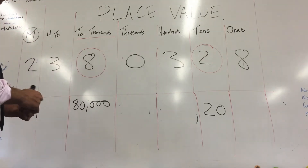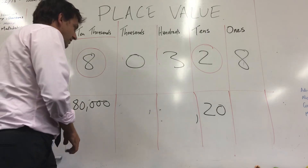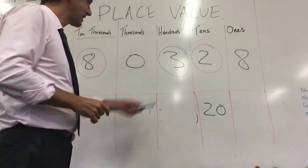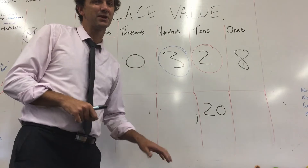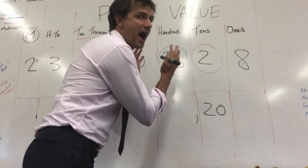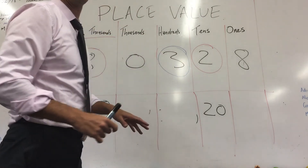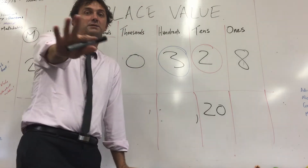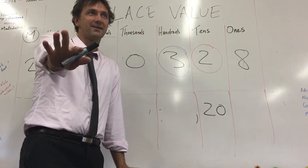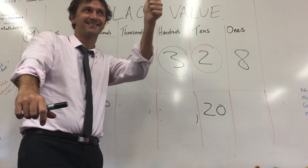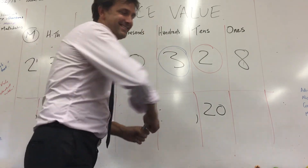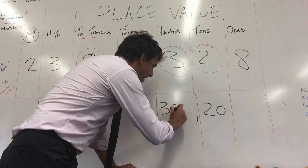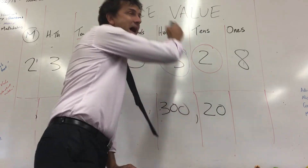What about the value of this three? Don't say three equals three. This is three in the hundreds column. So what does three in the hundreds column equal? Pause me, write it down. It equals three hundred, because it's in the hundreds column.